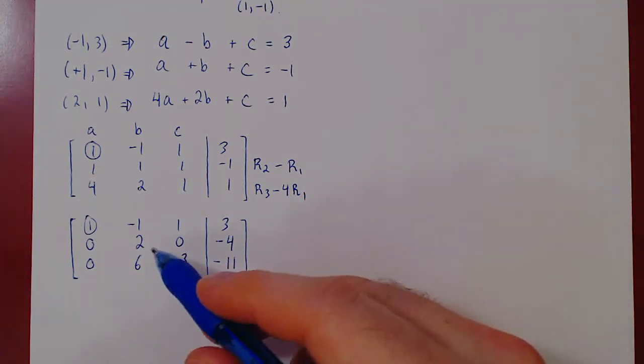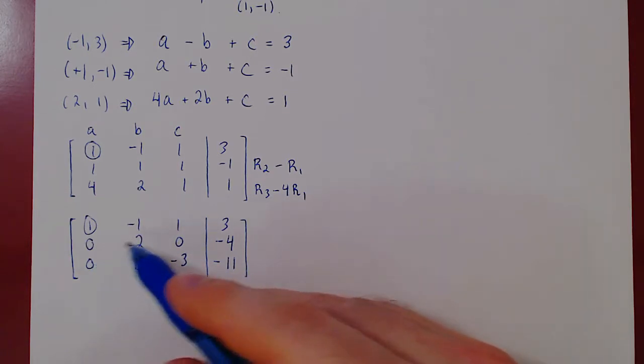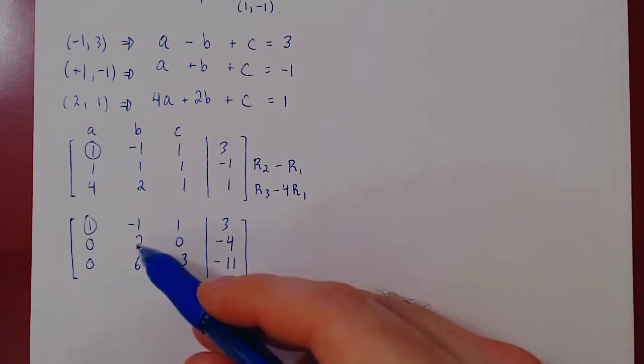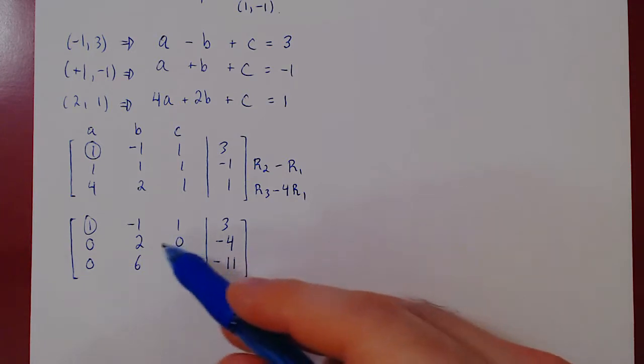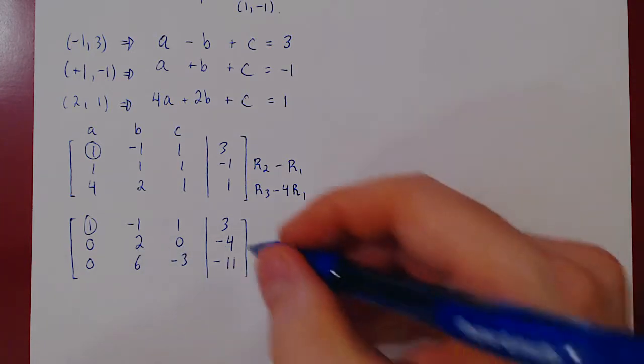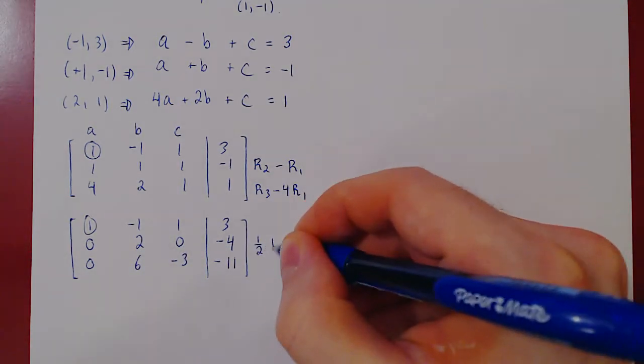Well, we can easily get our second leading one by multiplying row two by one half. And this is great because of the four here, we will not have any fraction. So one half of row two.